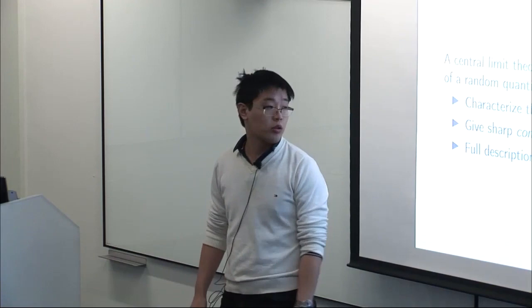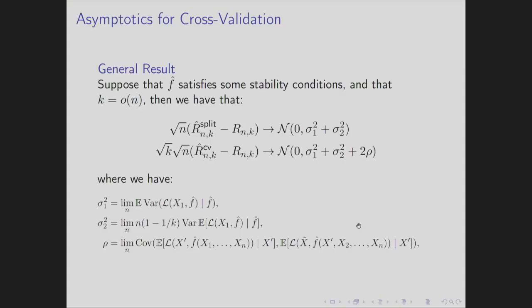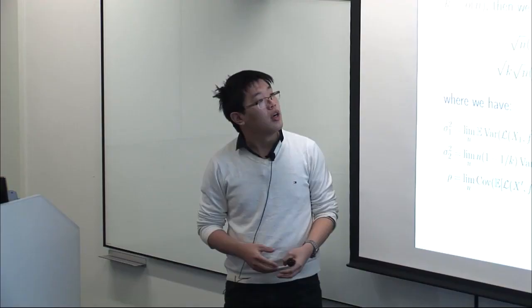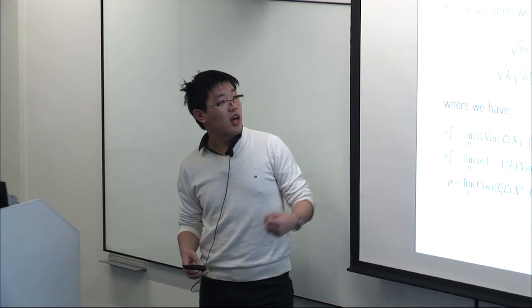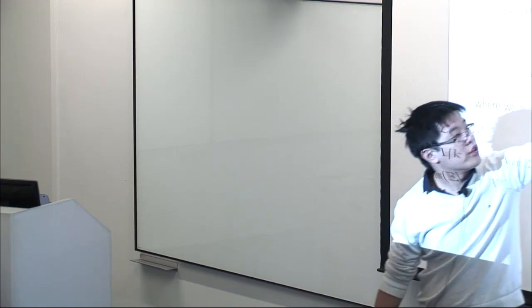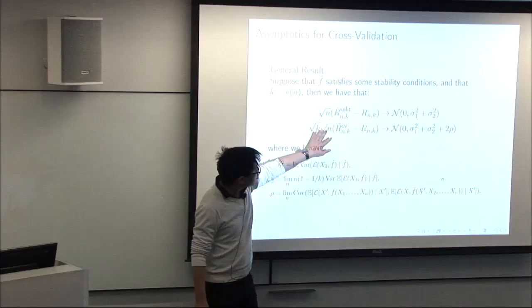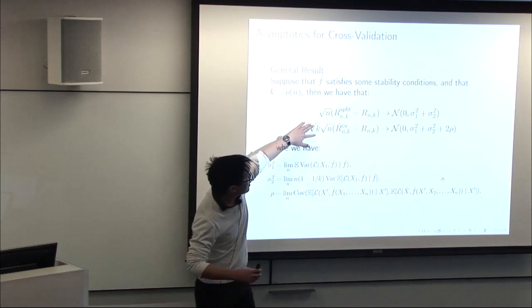Let me present the general result. Under some stability conditions on F, we have a general central limit theorem where the split estimator converges to one quantity, and the cross-validation estimator, rescaled by the initial factor of k, converges to another quantity. Let me give some intuitions for those quantities.